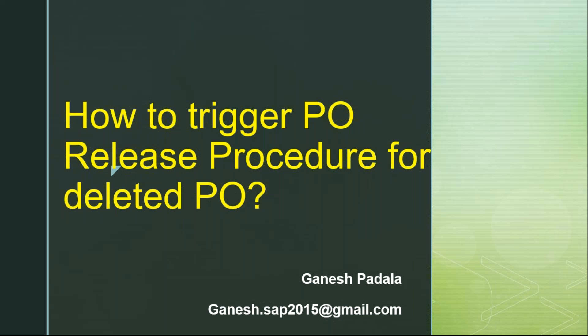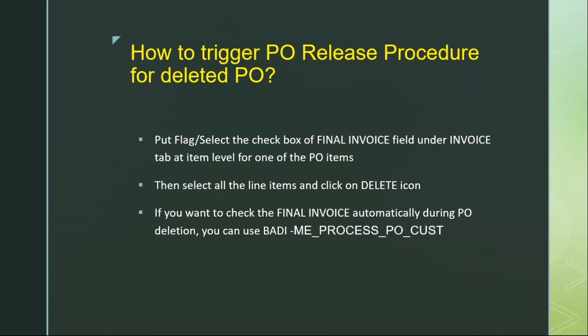I came with a new video. Generally, when you delete the purchase order — when you keep the deletion flag to the purchase order — the release tab will disappear from the PO header. But if you want to trigger the purchase order release procedure although you deleted all the line items of the PO, how to achieve that? How to trigger PO release procedure for a deleted PO? In this video we are going to learn that.